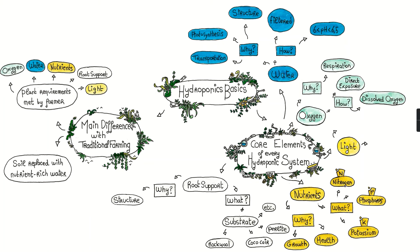Finally, light — because if there is no light, there is no photosynthesis. The type and quantity of light a plant needs every day, also called daily light integral or DLI, can be met through natural light or artificial light.